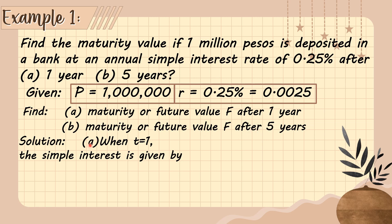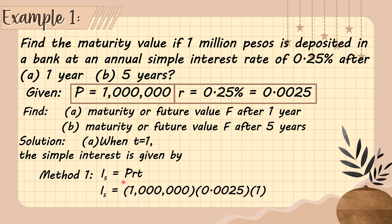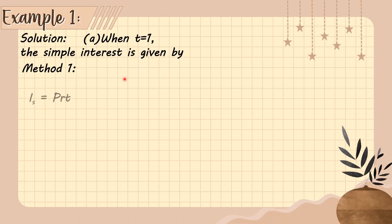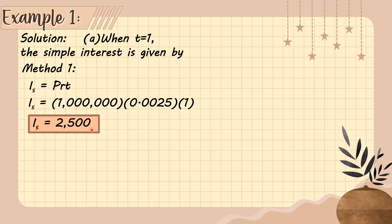Let's solve first letter A, when T is equal to 1. The simple interest is given by method one. Substituting: principal is 1,000,000, rate is 0.0025, and time is 1. Multiplying all of them, that gives us 2,500. So the interest on P1,000,000 at 0.0025 is 2,500.